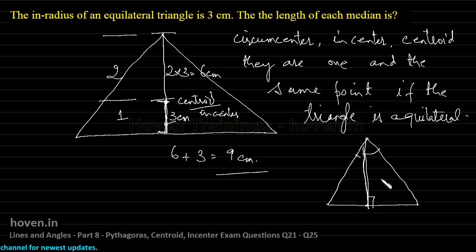Which means that the circumcenter, the incenter and the centroid, all of them are on the same point. And the same line acts as all of them. Let us move to our next question now.